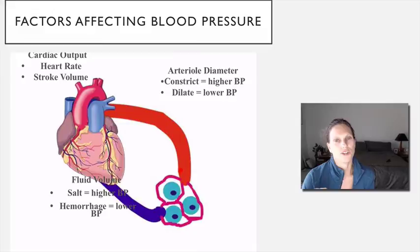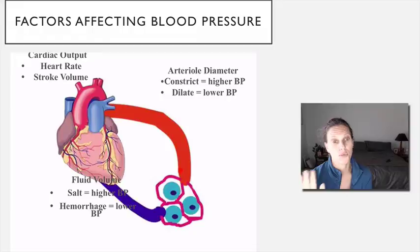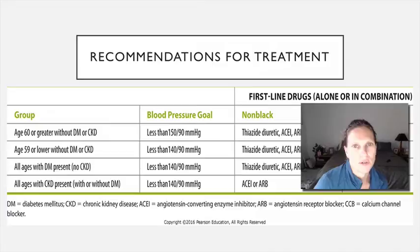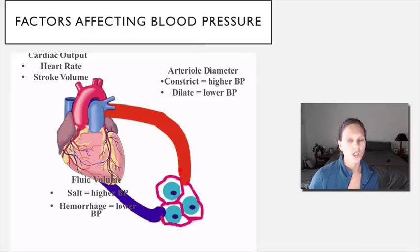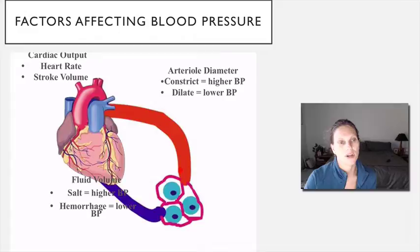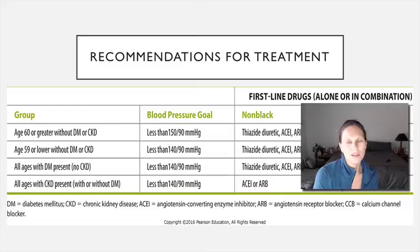Constricting vessels increases blood pressure; vasodilating vessels decreases blood pressure. The other variable is how much fluid is in the system — the more fluid, the higher the blood pressure, and a decrease in fluid decreases blood pressure. Our drugs will ultimately plug into this: we'll have drugs that vasodilate, drugs that slow the heart down or decrease contractility, and drugs that affect fluid volume.